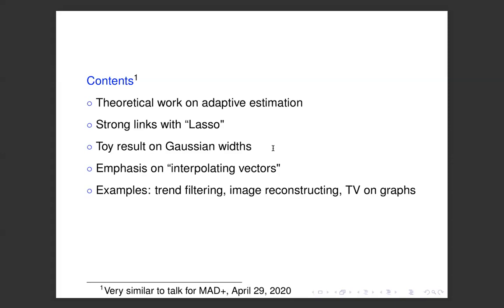The emphasis in the talk will be on sparsity and interpolating vectors. The examples will be trend filtering, image reconstruction, and total variation on graphs.